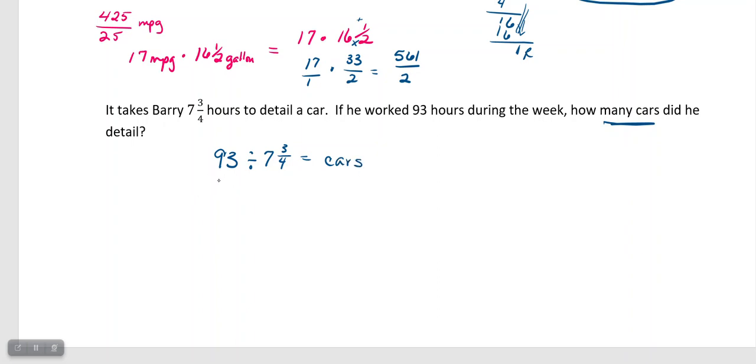So, with division, they have to be improper fractions. So, I'm going to make my 93 over 1. I'm going to leave it division because I've got to convert the seven and three-fourths. Seven times four is 28 plus 3, 31 over 4.